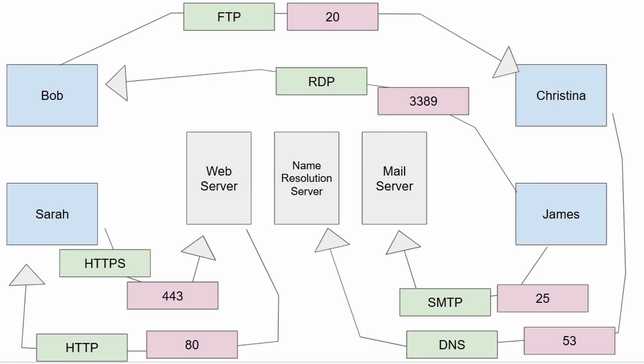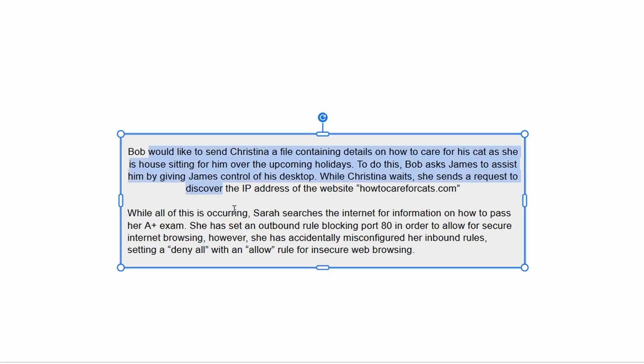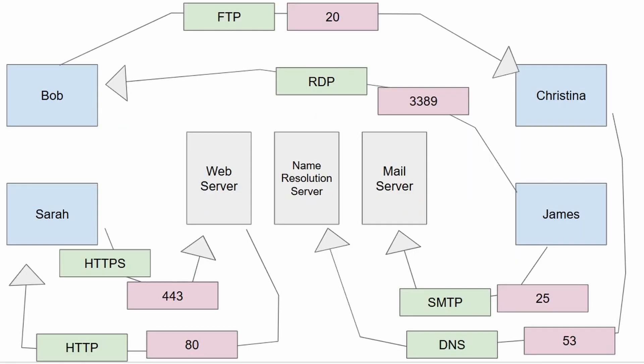What we have done in this performance-based question is gone through written requirements, then identified the correct protocol and port for each scenario: FTP on port 20, RDP on port 3389, DNS on port 53, HTTPS on port 443, HTTP on port 80, and SMTP on port 25. On your actual exam, you may have to type answers in without multiple choice options, so make sure you have a solid understanding. Don't rely on multiple choice to get you through. Hopefully you enjoyed this one — I'll keep putting out these free videos and I'll see you in the next one.